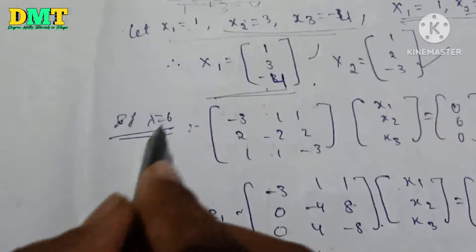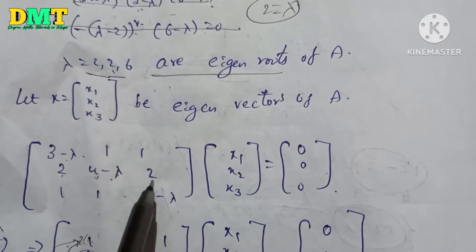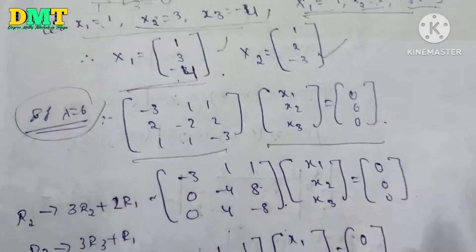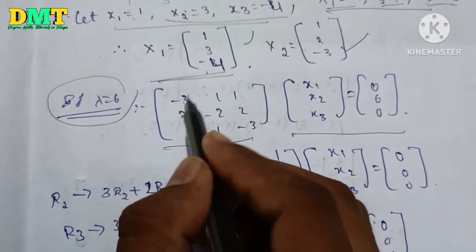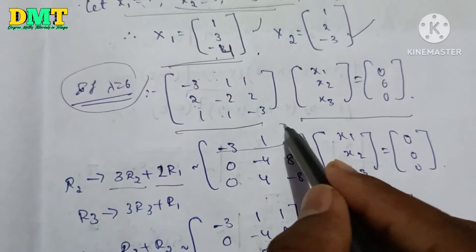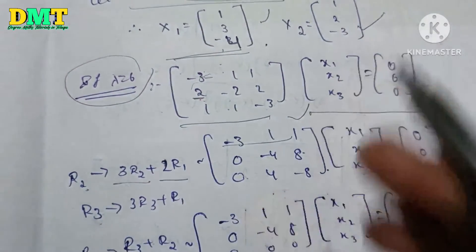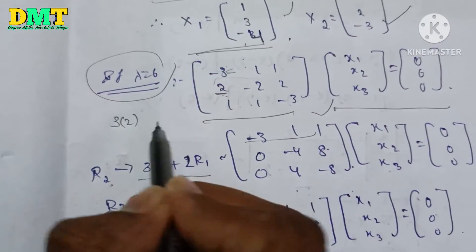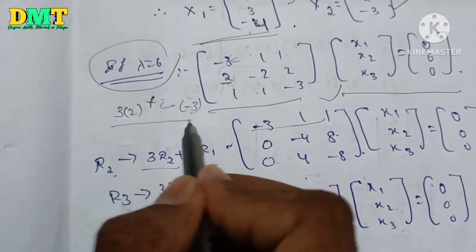Then for lambda equal to 6: the matrix is (3 minus 6), 1, 2, (4 minus 6), 2, 1, (3 minus 6), giving minus 3, 1, 2, minus 2, 2, 1, minus 3. We perform row operations here to find the eigenvector for lambda equal to 6.